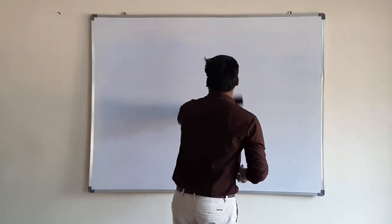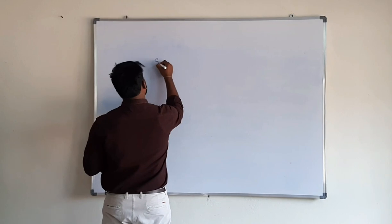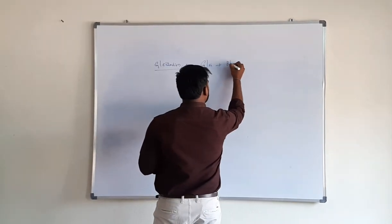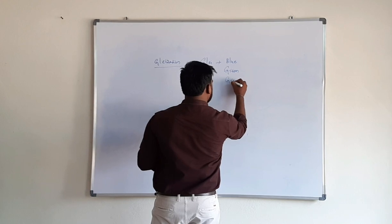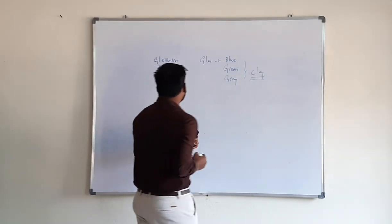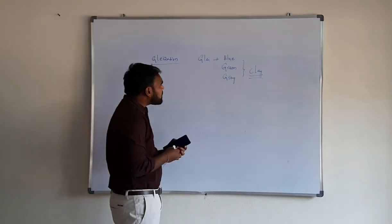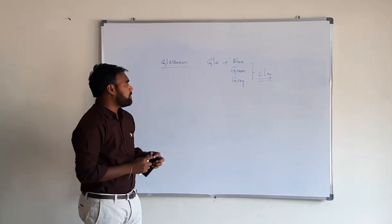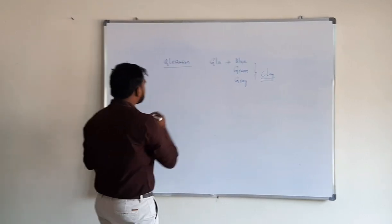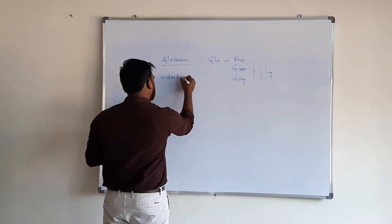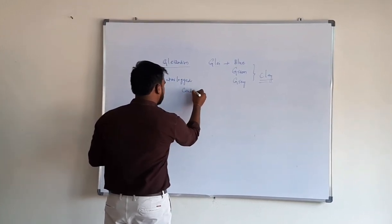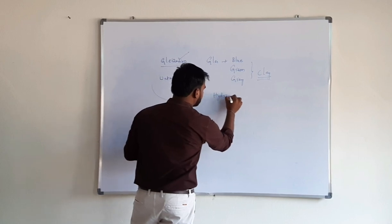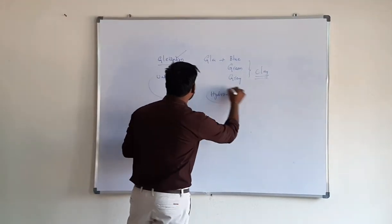Gleization is the development of blue, green, or grey color horizons in the soil profile. This gleization process occurs under waterlogged conditions. The soils formed due to gleization are known as hydromorphic soils.